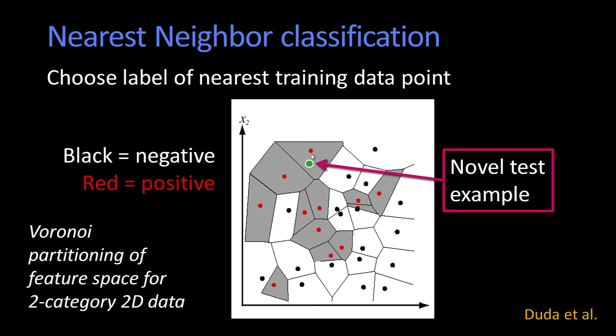And the computer scientists among you will recognize that as a Voronoi partitioning. When you partition a space using a Voronoi method, you essentially carve the space up into these little chunks where this chunk means that if you're in that chunk, this black point is the closest one to you. And so all nearest neighbor is doing is giving you a Voronoi partitioning of the space.